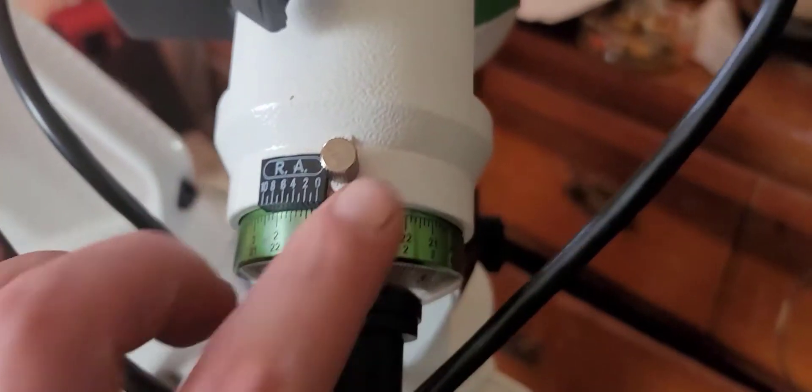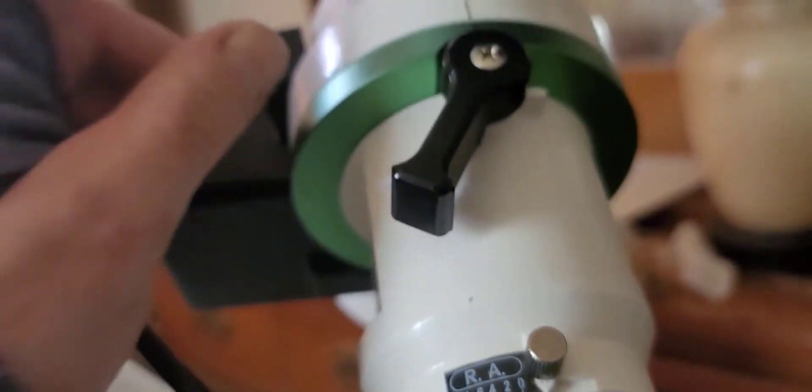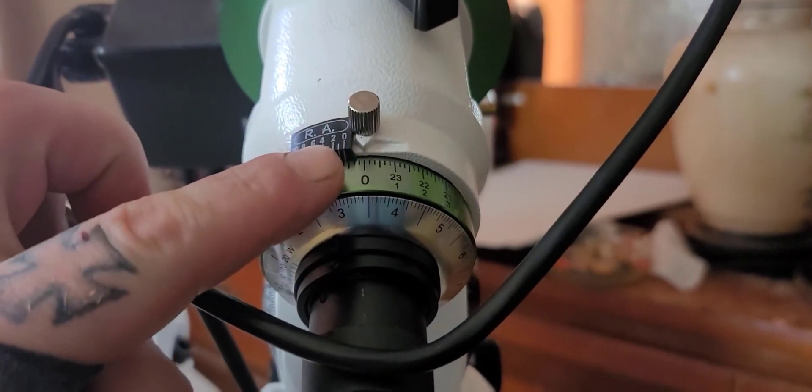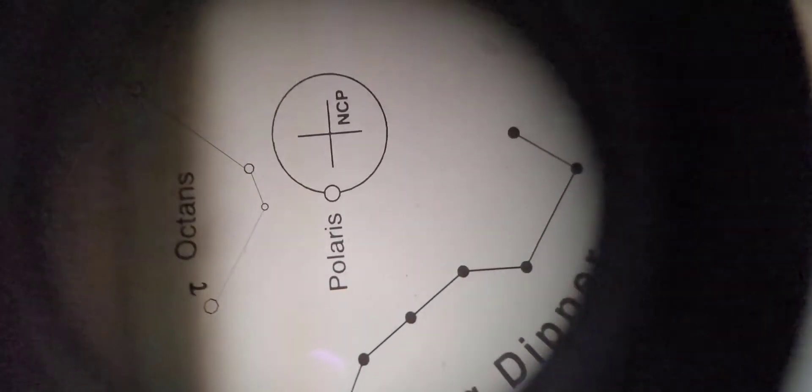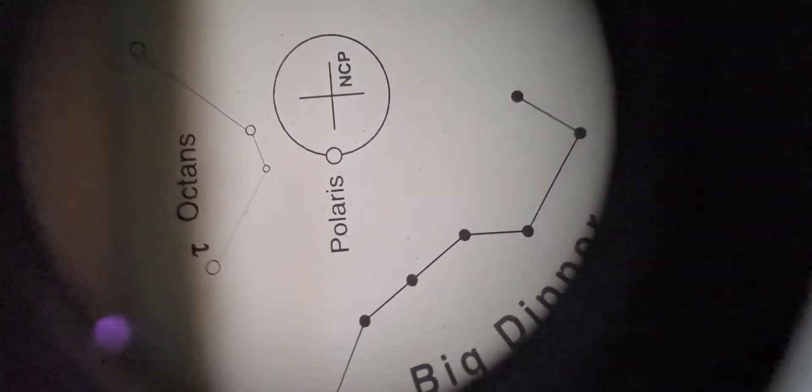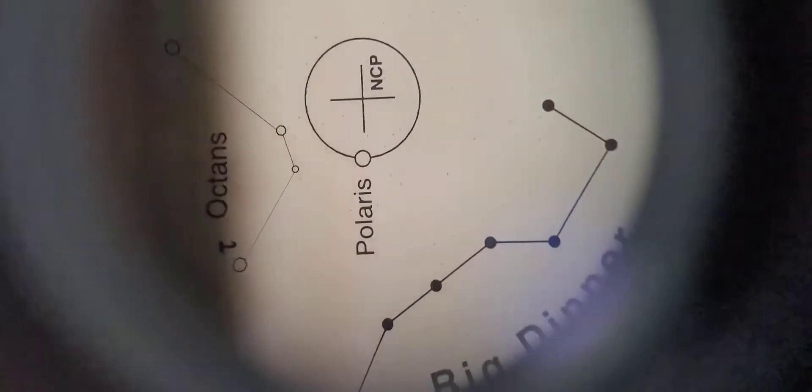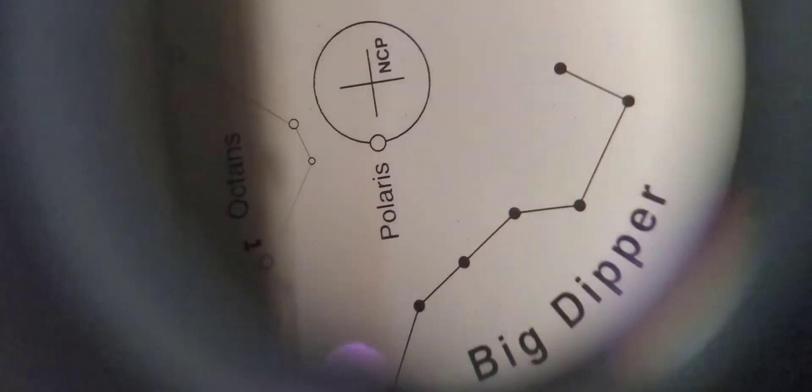Now this dial here, you're going to loosen your RA clutch and while looking through your polar scope, even if your reticle is different, what you're going to want to do is move your RA axis until you've got that plus straight up and down. And yours, you'll have a crosshair in there too. Make sure that if it's off a little bit, that it's perfectly up and down like this.